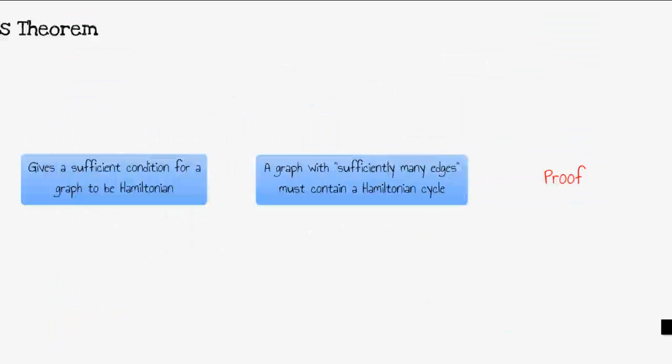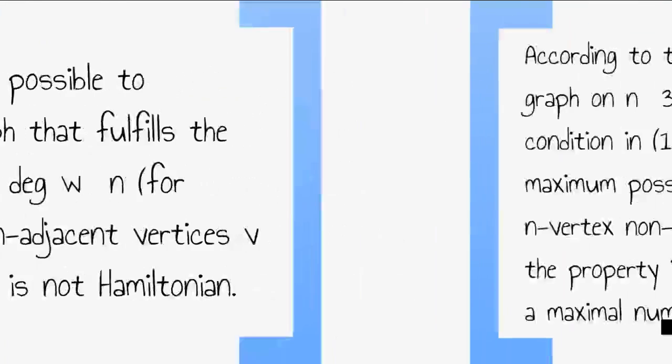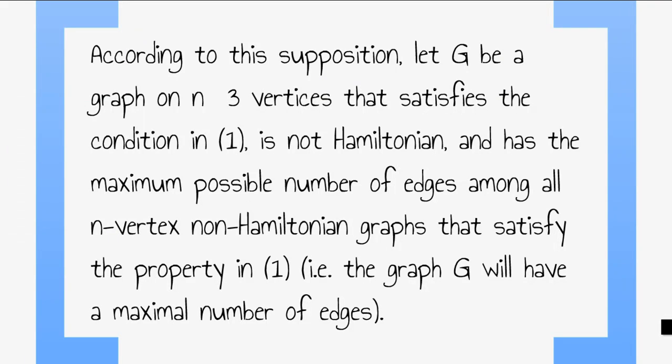Proof of Orr's Theorem. Suppose it were possible to construct a graph that fulfills the condition DEG V plus DEG W is greater than or equal to N, for every pair of non-adjacent vertices V and W of G and is not Hamiltonian. According to this supposition, let G be a graph on N greater than or equal to 3 vertices that satisfies the condition in 1, is not Hamiltonian, and has the maximum possible number of edges among all N vertex non-Hamiltonian graphs that satisfy the property in 1. An example of this is the graph G will have a maximum number of edges.